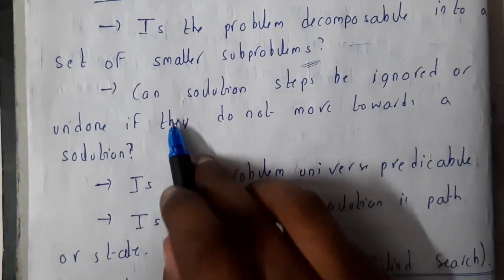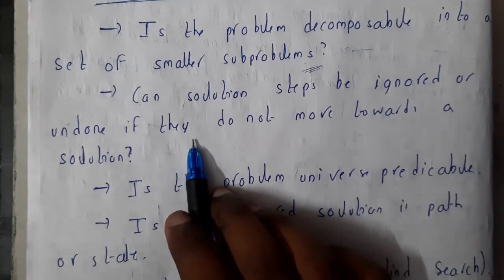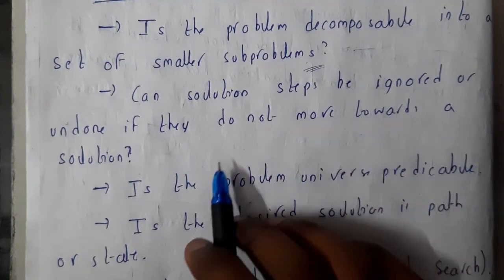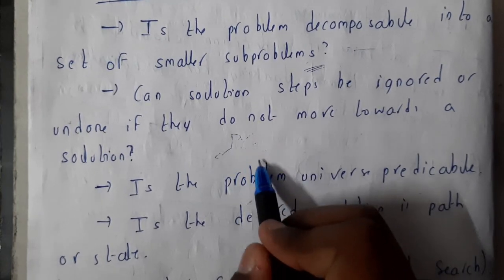If it is reducible further, you will be reducing it. So can solution steps be ignored or undone if they do not move towards the solution? So basically you will be doing many types of paths.